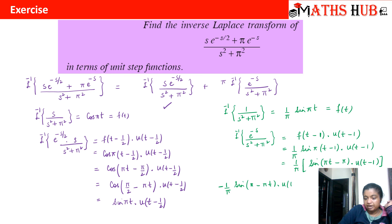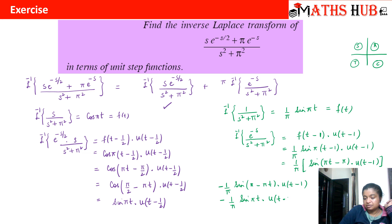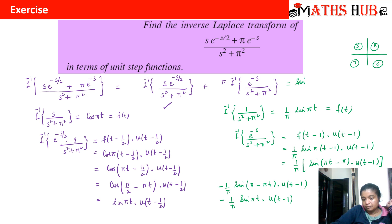Since sin of a negative angle is negative, sin(pi t minus pi) equals minus sin(pi minus pi t). Using the unit circle, sin(pi minus pi t) is positive and equals sin(pi t), so this becomes minus (1/pi) sin(pi t) multiplied by u(t minus 1). Substituting both parts into the final answer: the first term gives sin(pi t) into u(t minus 1/2) and the second term, after pi cancels, gives minus sin(pi t) into u(t minus 1).